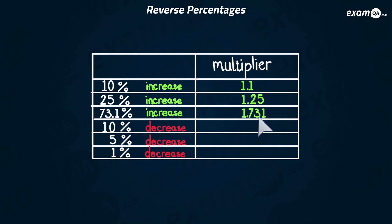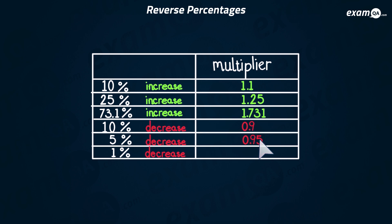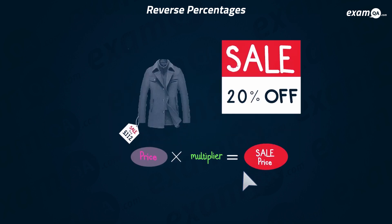Now we've got some decreases. With increases they started off with one point, but decreases are going to start off with zero point. So a 10% decrease — if you think of the original price as 100%, if you do a 10% decrease you're left with 90% of that original price. That's a little clue to get the multiplier. The multiplier is 0.9. A 5% decrease has a multiplier of 0.95, and a 1% decrease has a multiplier of 0.99.